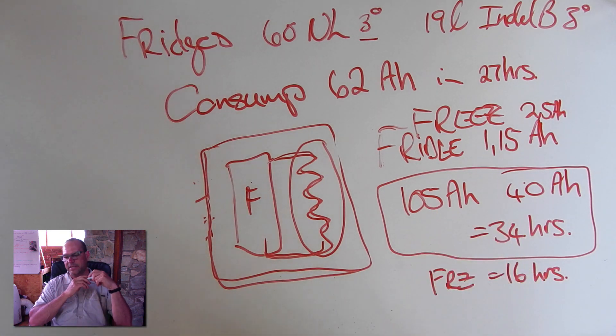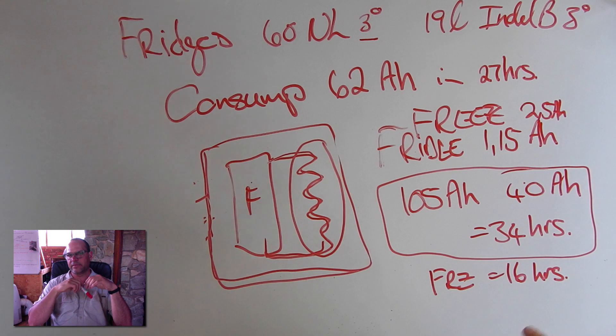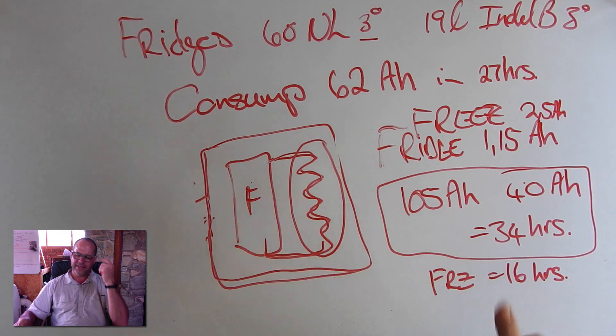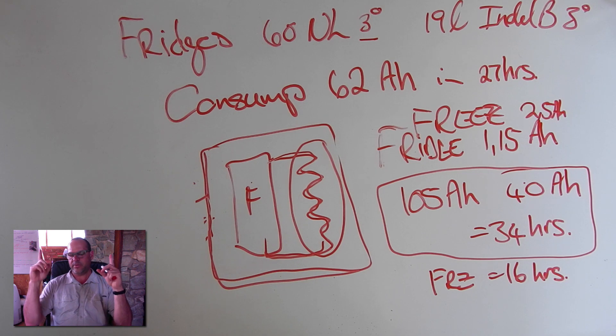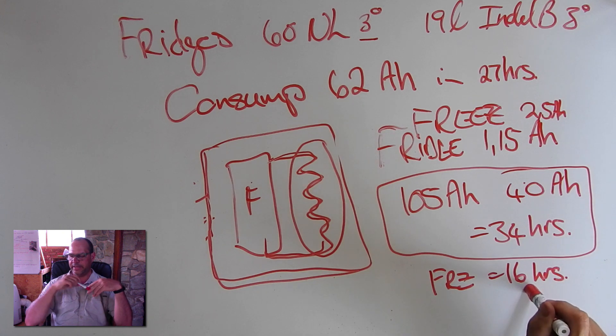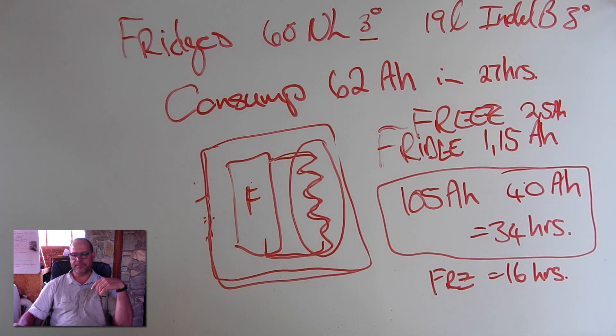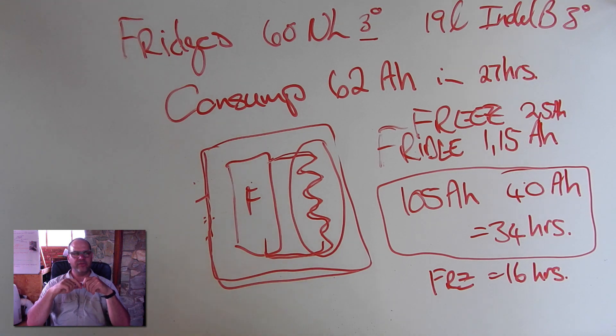Now the question is, is a 105 good enough for this? It is more than 12, which means it will last me through the night. But it's getting very close to, is it good enough or not? Do I need a second battery? Because if I do anything more, if I run an inverter or I run a lot of lights or I have a second fridge, then this is going to be a problem. And that's why I normally say one battery per fridge is roughly what you need. If you're running two fridges, you should have two batteries. Otherwise, you're just going to destroy your batteries at some point.